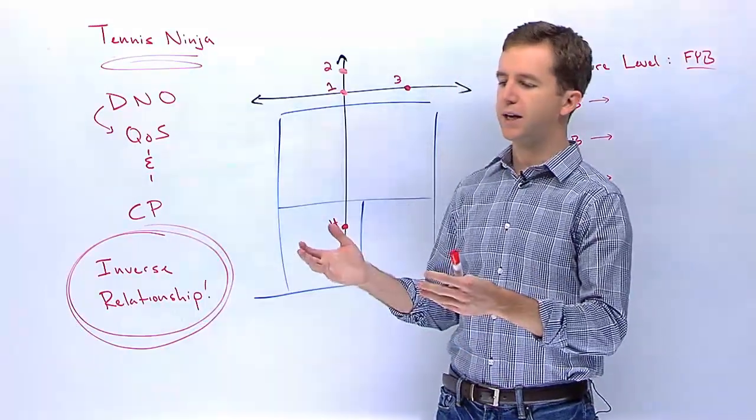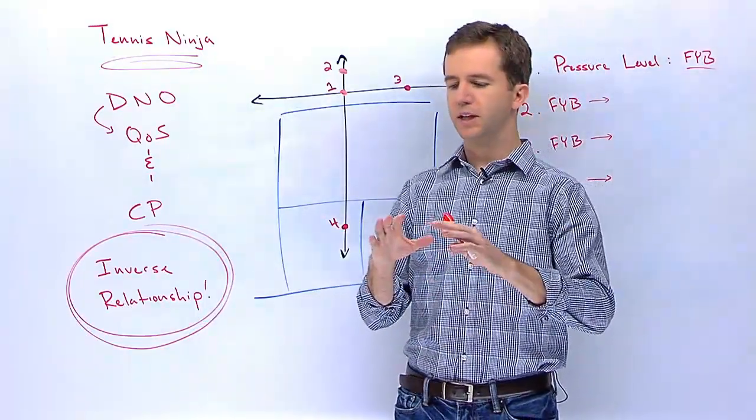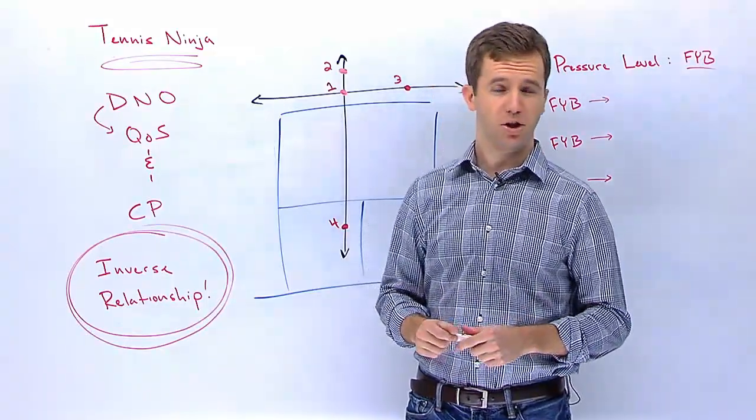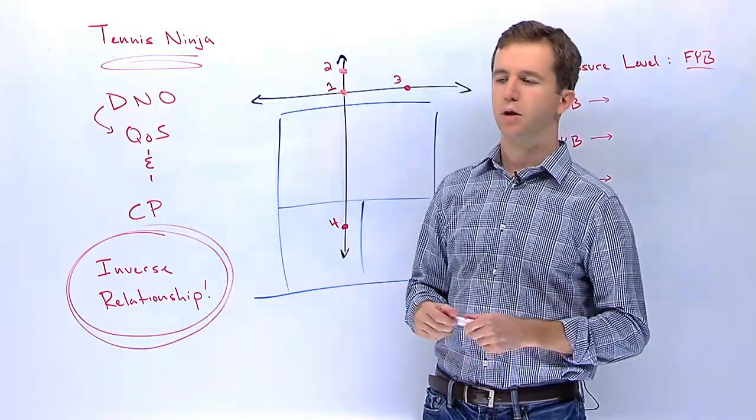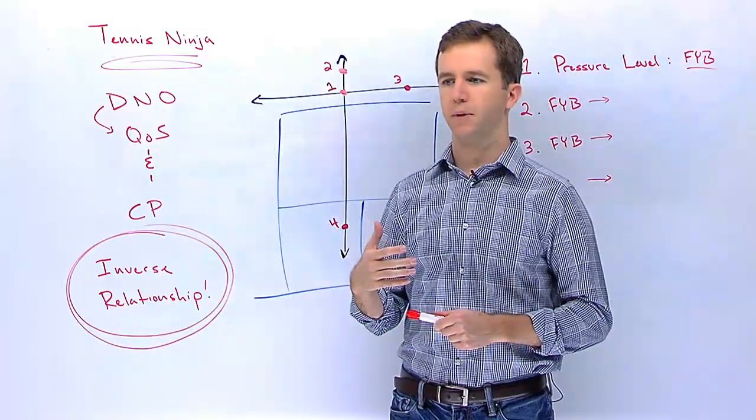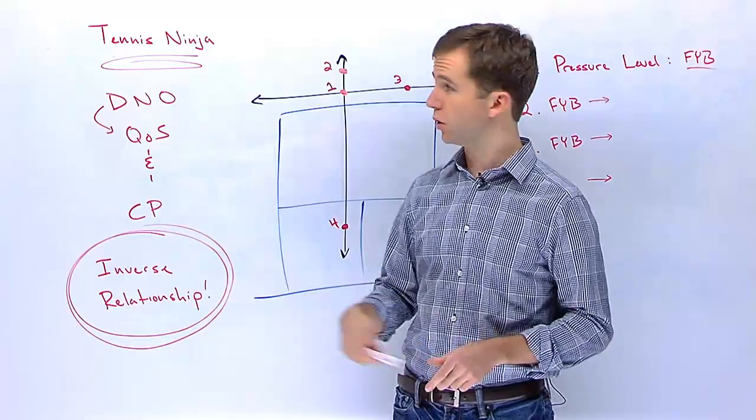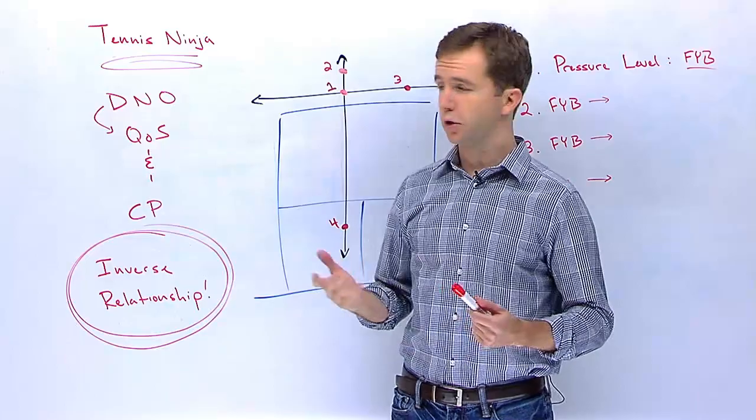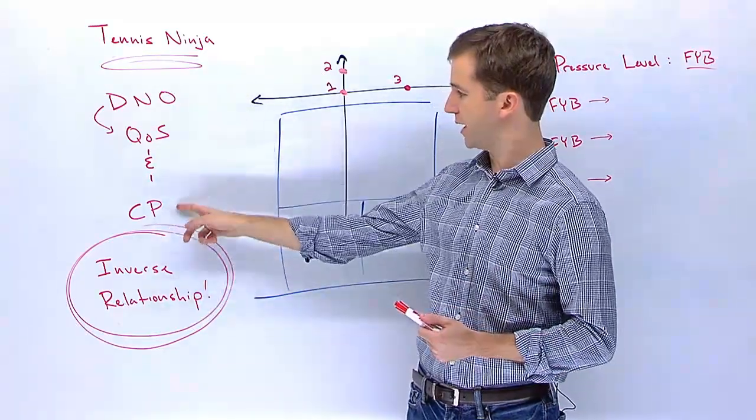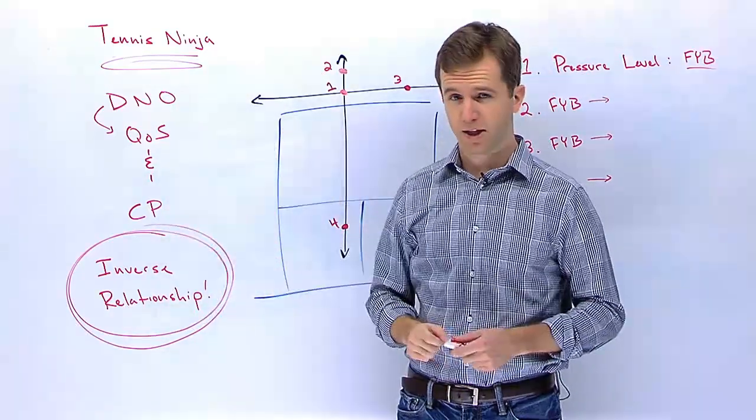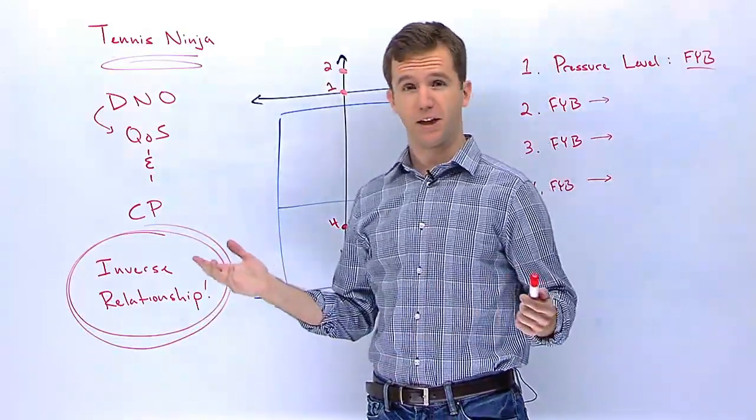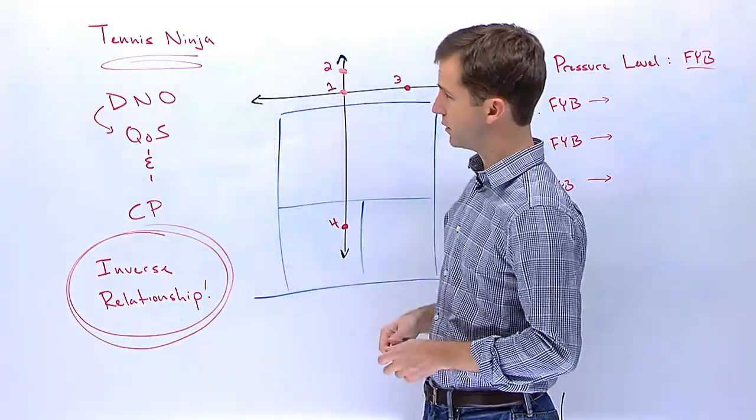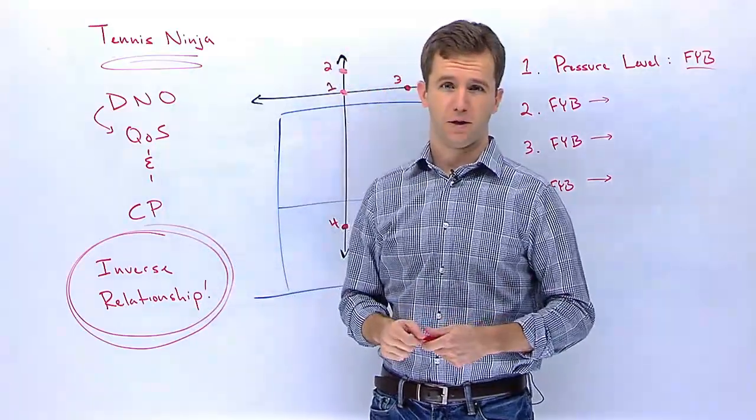So to take a step back and prove to you from a more theoretical standpoint how important court positioning is, I want to talk about some concepts from a training program we have called Tennis Ninja. Now I know many of you watching this video are familiar with DNO, QOS, and CP. We're going to explain all of that right now. So DNO, that stands for Defense Neutral Offense.